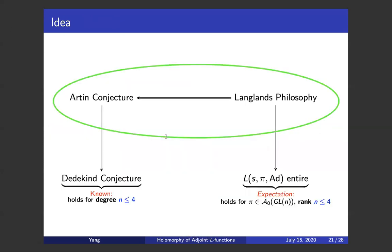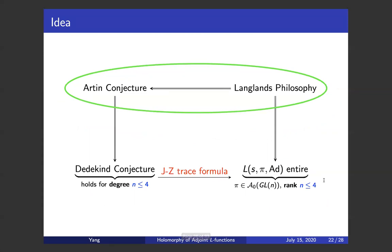The idea of the proof is as follows. We have this diagram showing that Langlands implies everything. On the Dedekind conjecture part, we know it holds for degree less or equal to 4. Since degree should correspond to rank, we have the natural expectation that the adjoint L-function is entire for rank less or equal to 4. Since over the number field, Artin's conjecture and Langlands' philosophy are beyond scope for the moment, we can only expect to use lower-level tools. The key implication is our main toolkit called the Jacquet-Zagier L-trace formula.